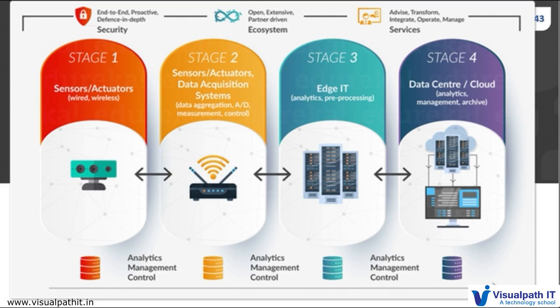This pictorial presentation shows exactly how the four stages work. In stage one, we have sensors and actuators, whether wired or wireless. This communicates with stage two — sensor actuator data acquisition — where whatever data is captured by these sensors is processed. In stage three, data composition and analytics happen; it's a pre-processing step before sending data to the cloud. The last stage is the data center and cloud, where exactly your IoT application lies. Between each stage, the process involves analytics, management, and control.